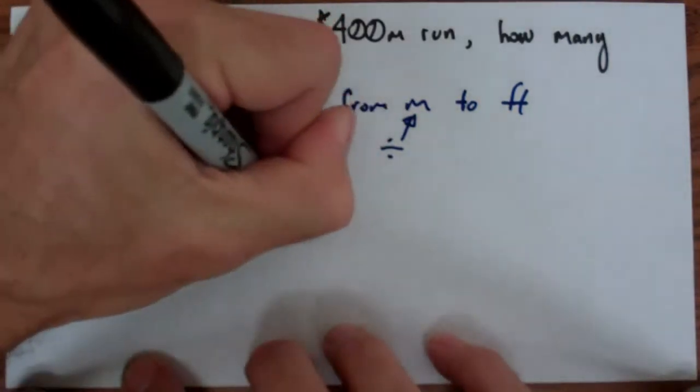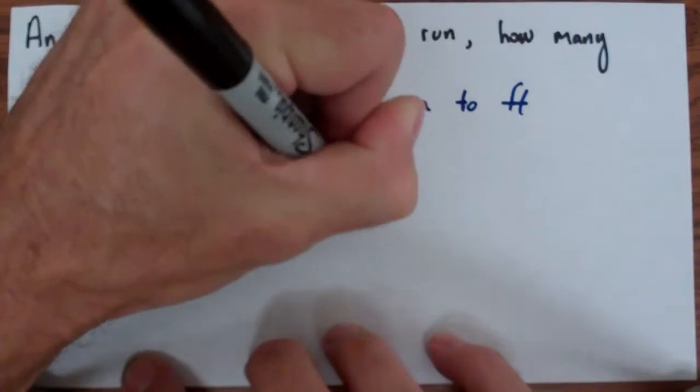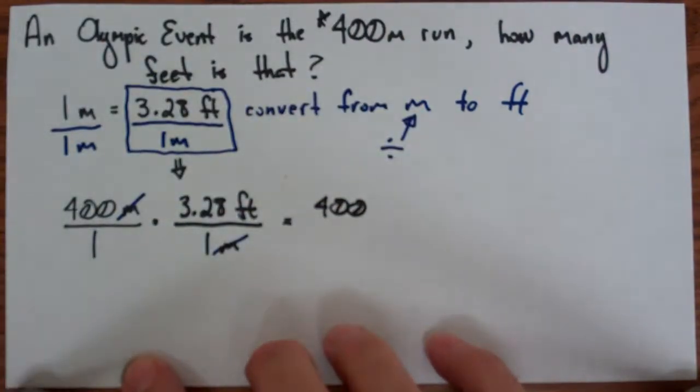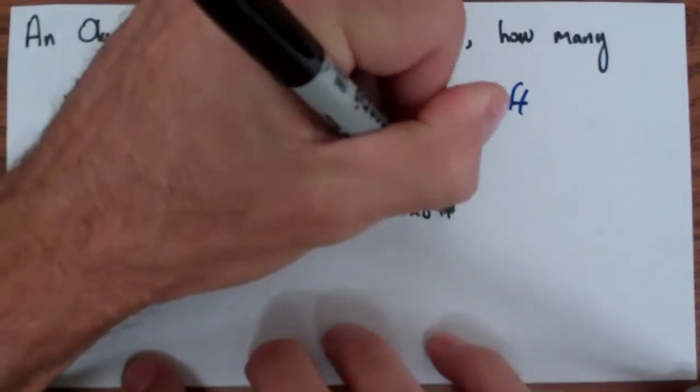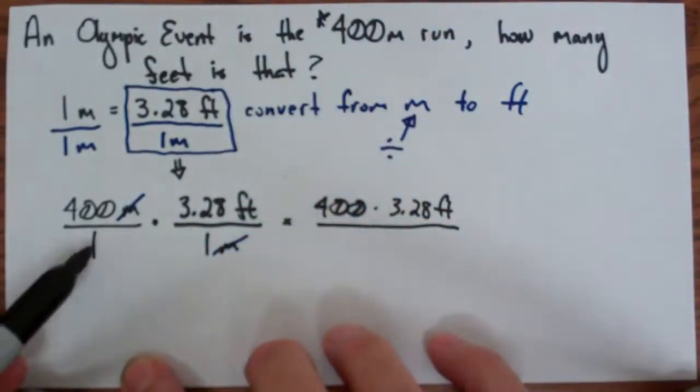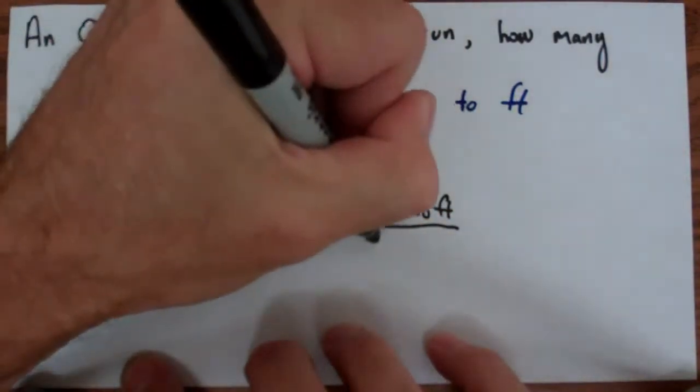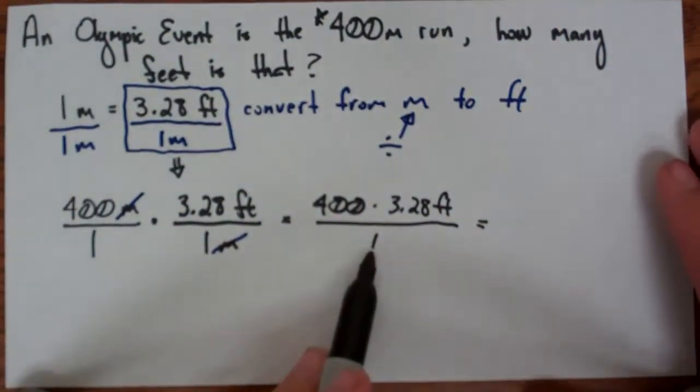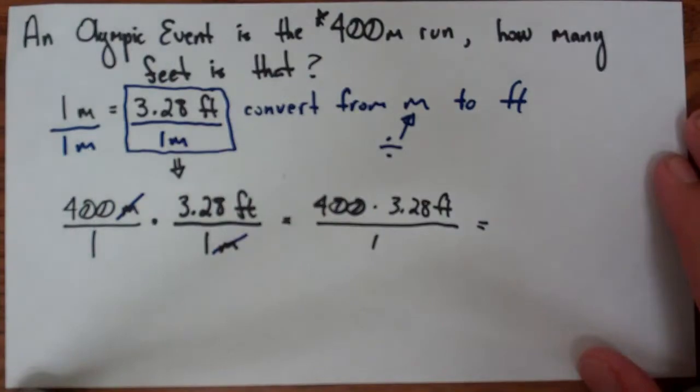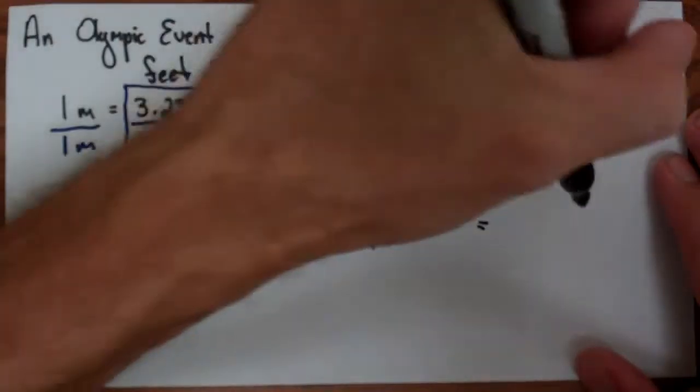Now I'm going to end up with 400 times 3.28 feet all over 1 times 1 is just 1. So I'm just going to end up with a pure number, because anything divided by 1 is just 1, and the only unit I have is feet.